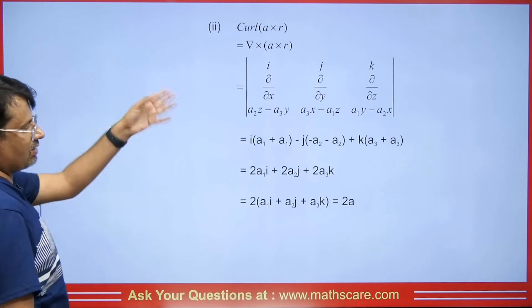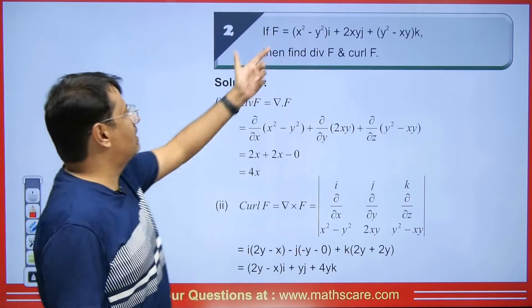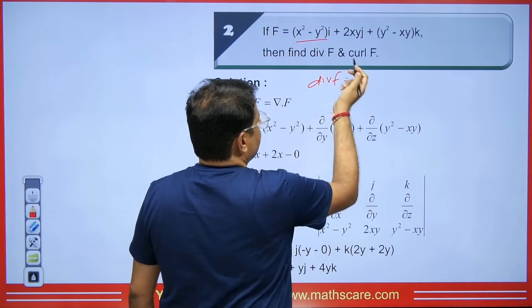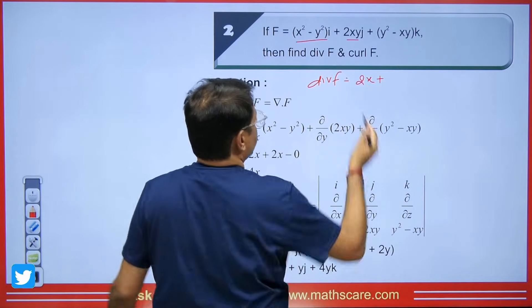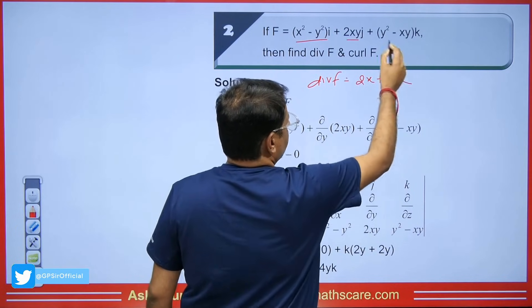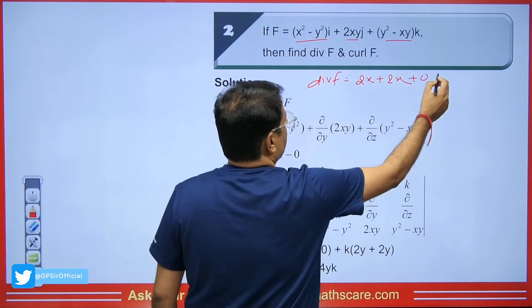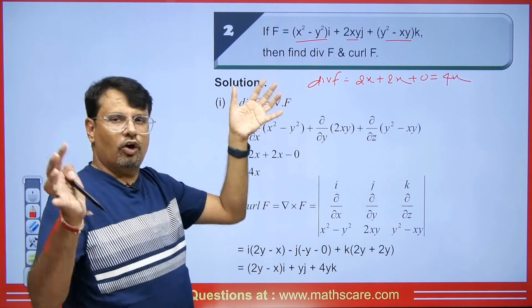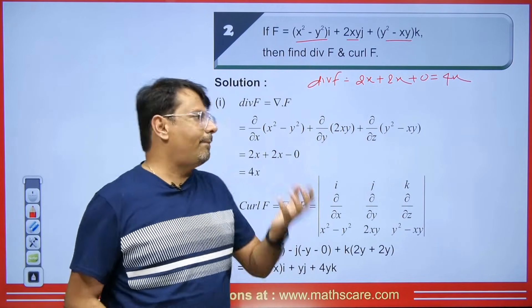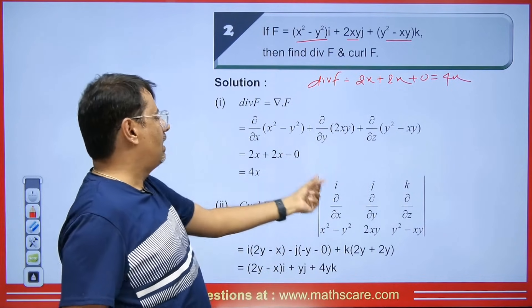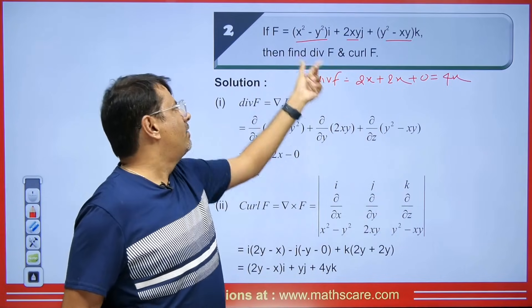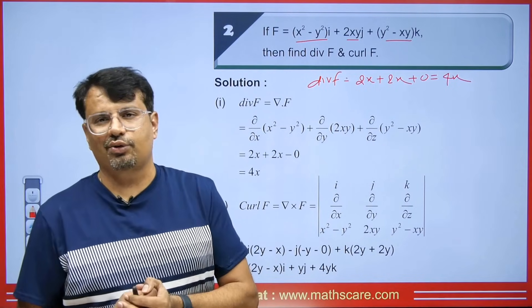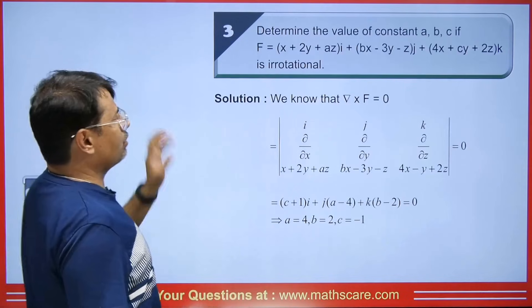The next question asks us to find the divergence and curl of a given vector f. Finding divergence is straightforward: the derivative of the i-coefficient with respect to x is 2x, the derivative of the j-coefficient with respect to y is 2x, and the derivative of the k-coefficient with respect to z is 0, giving divergence = 4x. For curl, set up the same i, j, k determinant with ∂/∂x, ∂/∂y, ∂/∂z and the coefficients of i, j, k, then find the determinant.